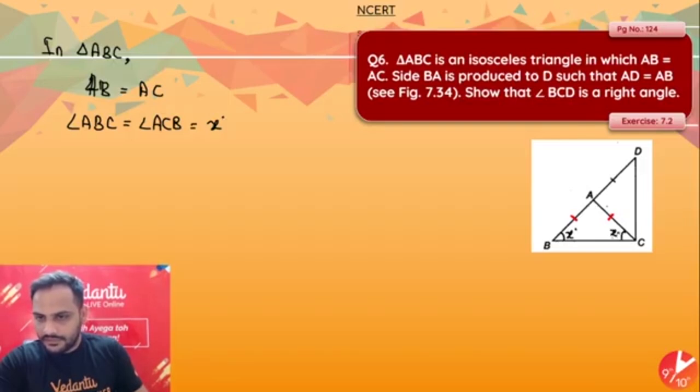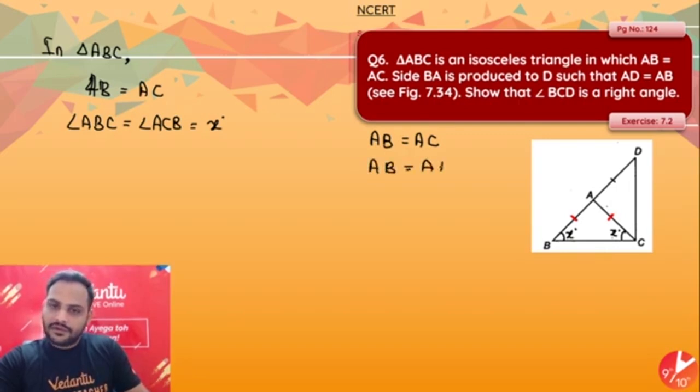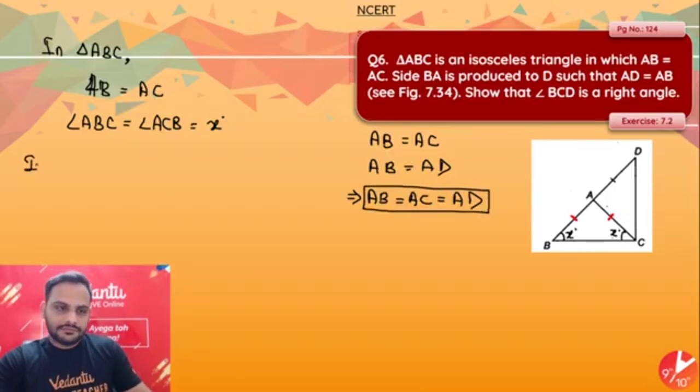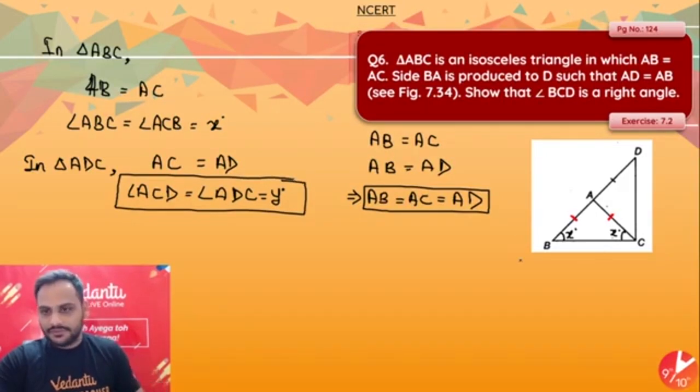This part is x degrees. Then they have told that side BA is produced to a point D such that AD and AB are again equal. I know that AB and AC are equal, and AB and AD are also equal. So I can clearly say from these two that AB, AC, AD all three are equal to each other. Now in triangle ADC, we have AC is equal to AD, so I can say angle ACD is equal to angle ADC. Let's say this time it will be equal to y degrees.